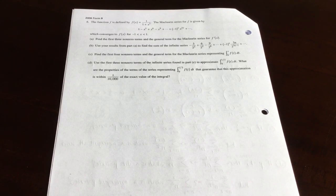It says the function f is defined by f of x equals 1 divided by the quantity 1 plus x cubed. The Maclaurin series for this function is given by 1 minus x cubed plus x to the 6th minus x to the 9th and so on, which converges to f for negative 1 less than x, which is less than 1.